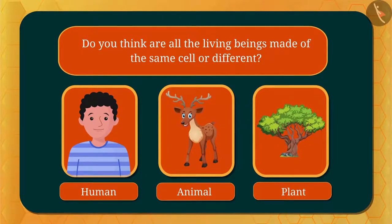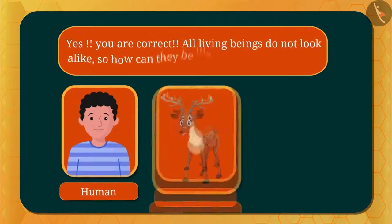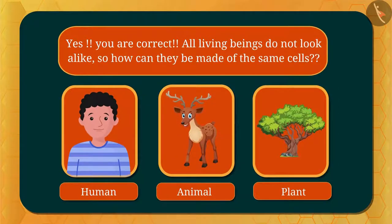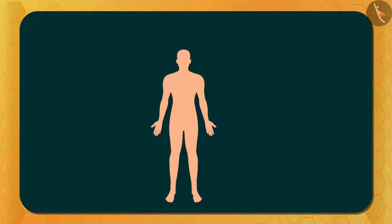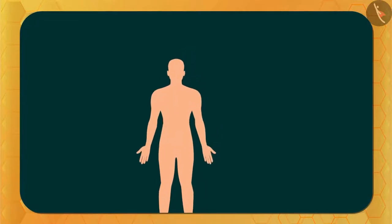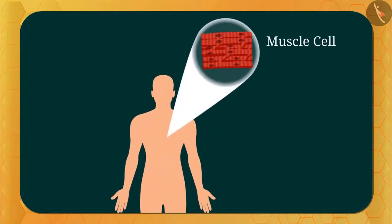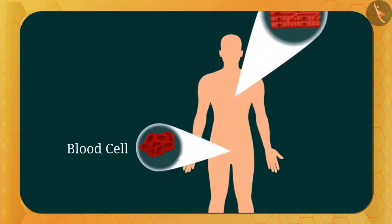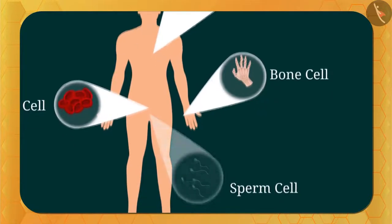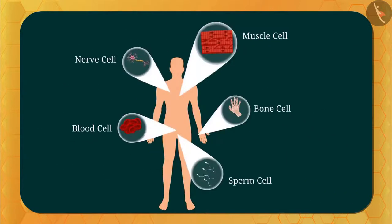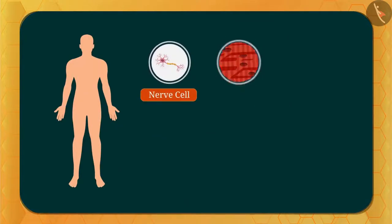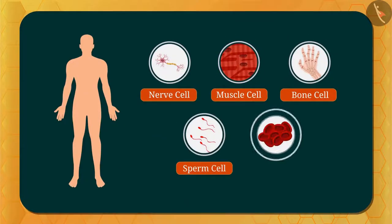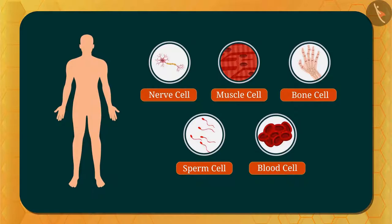Now, do you think all living beings are made of the same cell or different cells? You're correct — all living beings do not look alike, so how can they be made of the same cells? Not only this, many types of cells are found in multicellular organisms like humans. For example, muscle cells are of one type of structure, while other cells like blood cells, bone cells, sperm cells, and nerve cells are of different types. All cells are different, and the structure of a cell is according to its function.